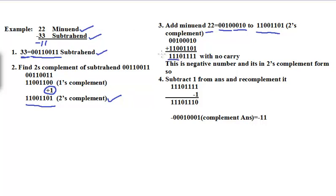We didn't get any carry, so if there is no carry, this means the result is a negative number and it is in two's complement form. Since it is a negative number, we have to subtract 1 from this answer and then recomplement it to get the positive answer.